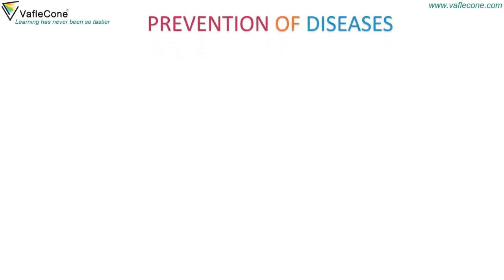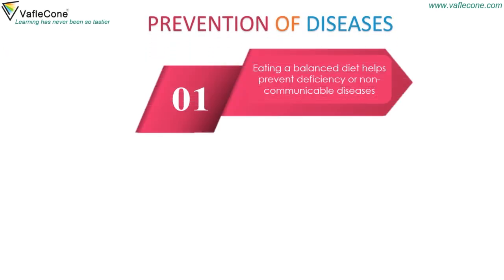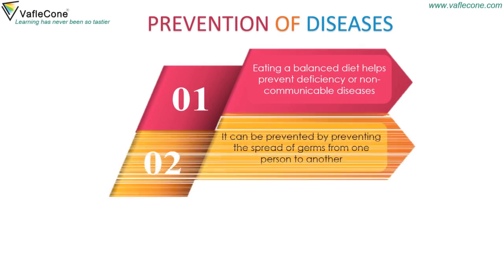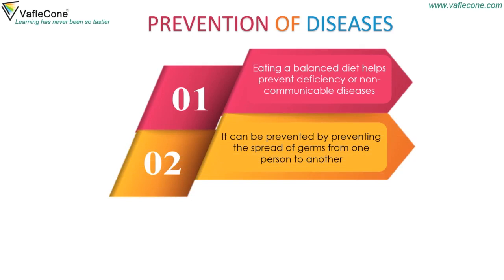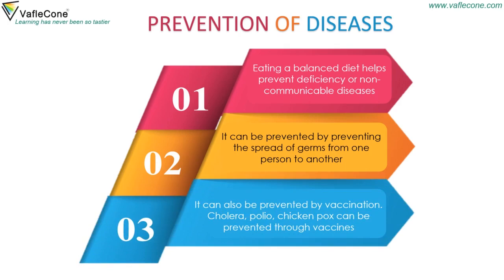Prevention of diseases: eating a balanced diet helps prevent deficiency or non-communicable diseases. It can also be prevented by preventing the spread of germs from one person to another, and by vaccination. Cholera, polio, and chicken pox can be prevented through vaccines.